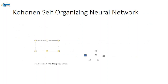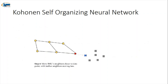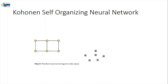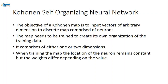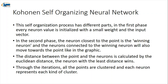The twenty-sixth algorithm is Kohonen Self-Organizing Maps (SOM). In this neural network, the network organizes itself. The objective is to input vectors of arbitrary dimensions to a discrete map comprised of neurons. The map is trained to create its own organization of training data — this is different from the previous neural networks discussed.